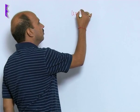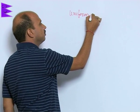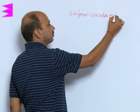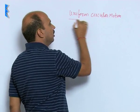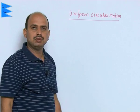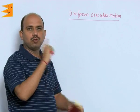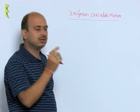So, first we will discuss here uniform circular motion. It is a very simple example: you take a stone, tie it with a thread and keep on moving like this, just revolve like this.